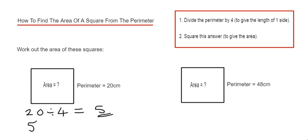And then we just need to square this answer. We just multiply it by itself. So 5 times 5 is 25. And that is the area of the square.